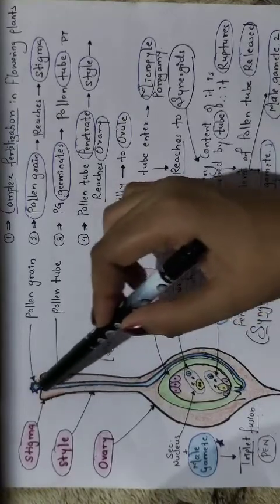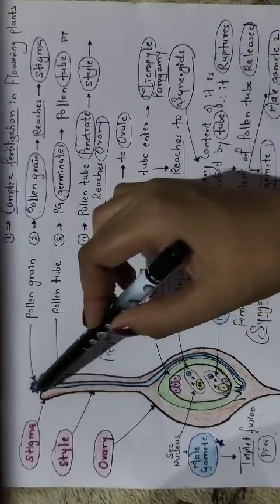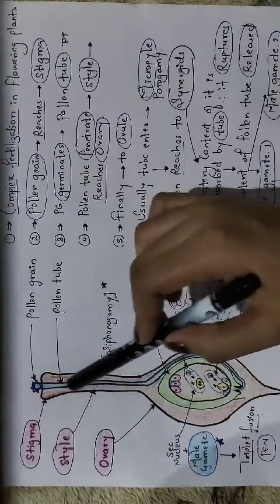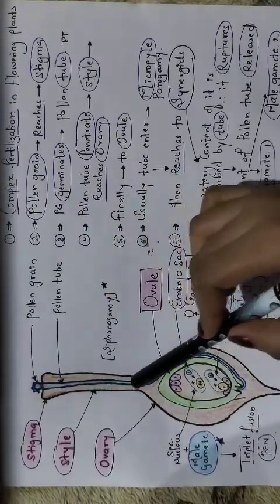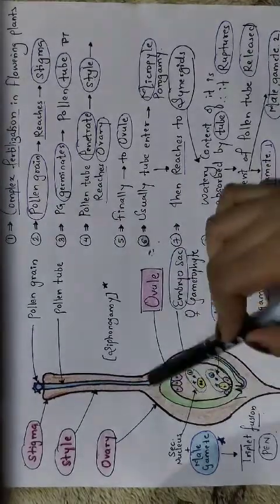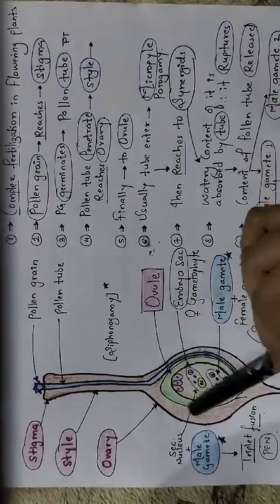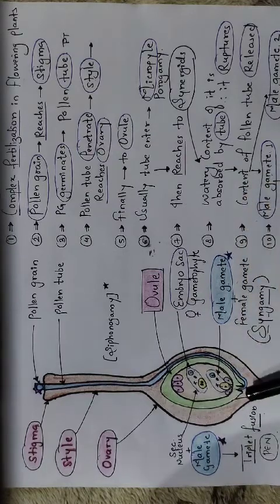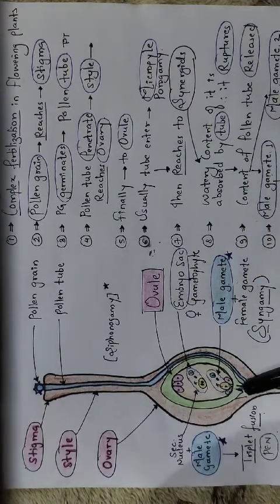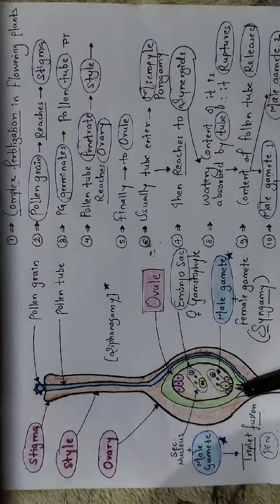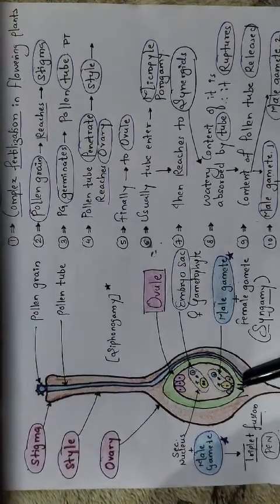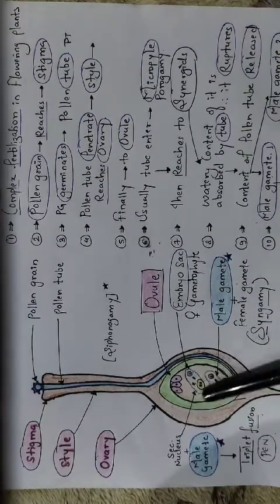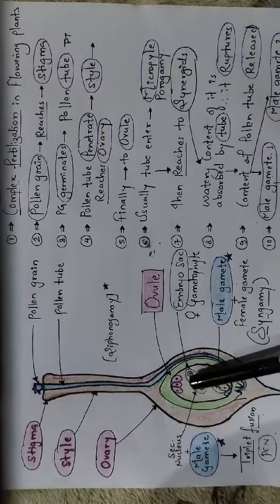The outer layer of the pollen grain ruptures and the inner intine germinates, forming the pollen tube, which penetrates inside the style. The style acts as a channel through which the tube enters and finally reaches the ovary chamber where the ovule is present. The ovule has a small aperture called the micropyle, which acts as an open channel through which the pollen tube enters to interact with the embryo sac — the female gametophyte.